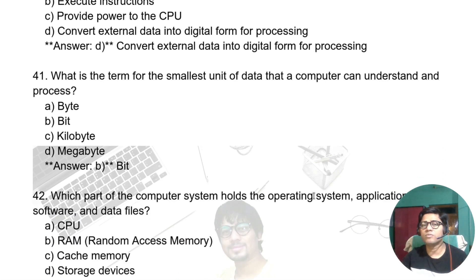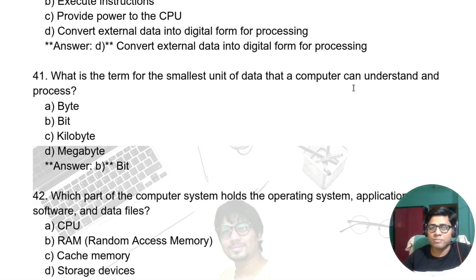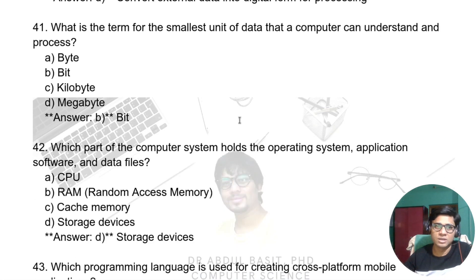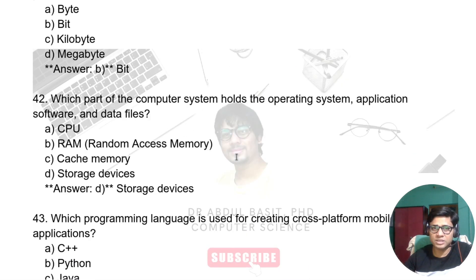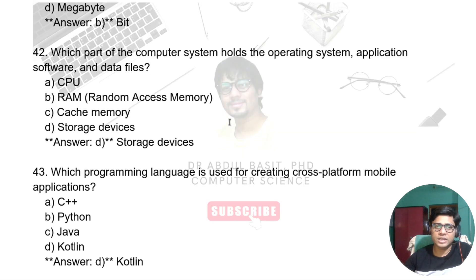What is the term for the smallest unit of data that a computer can understand and process? The answer is a bit. Which part of the computer system holds the operating system, application software and data files? The answer is a storage device.